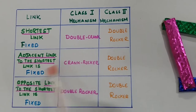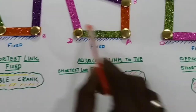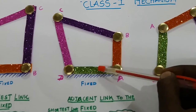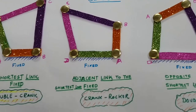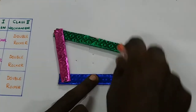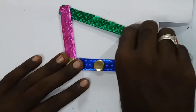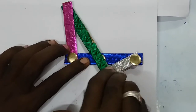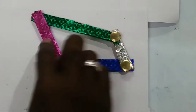Next, adjacent link to the shortest link is fixed. We can get a crank-rocker mechanism. Here the adjacent link DA is fixed. This is the model for the crank-rocker mechanism.